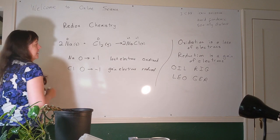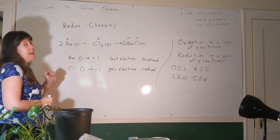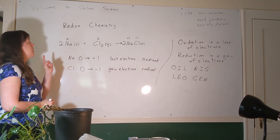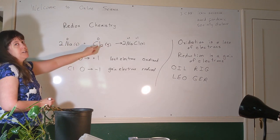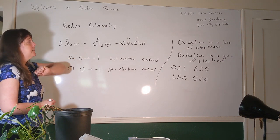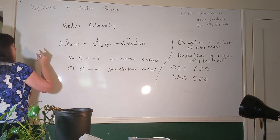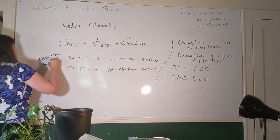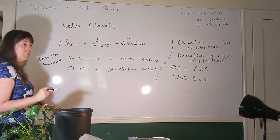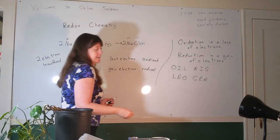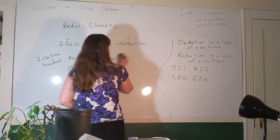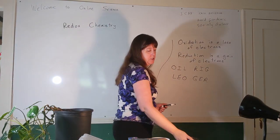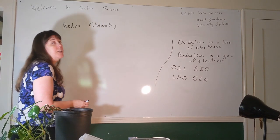Sodium had a one-electron oxidation and chlorine had a one-electron reduction. But we had two sodium atoms and one diatomic chlorine making two sodium chlorides, so two electrons were transferred in total. Both reactions shown so far are synthesis reactions creating ionic compounds, but those are not the only kinds of redox reactions.